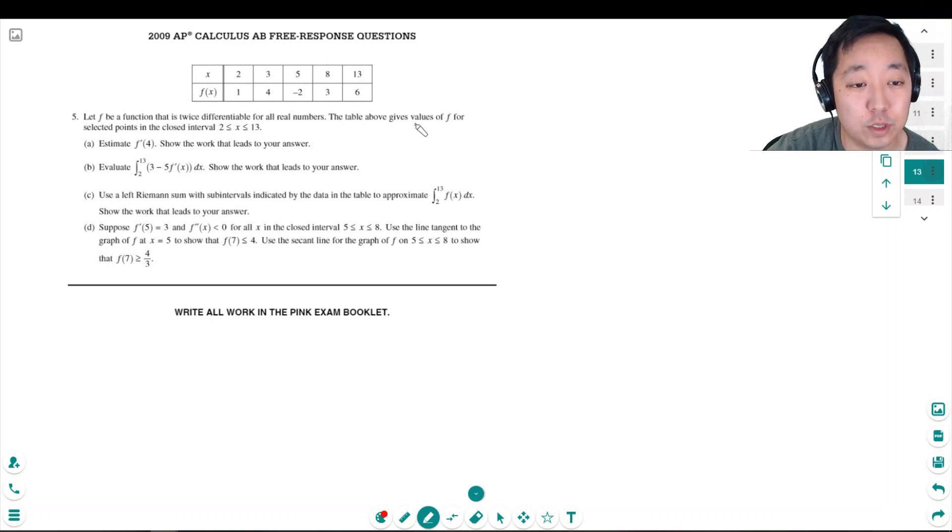Let f be a function that is twice differentiable for real numbers. The table gives values of f for selected points in the closed interval 2 to 13. Estimate the derivative at 4 and show the work that leads to your answer.